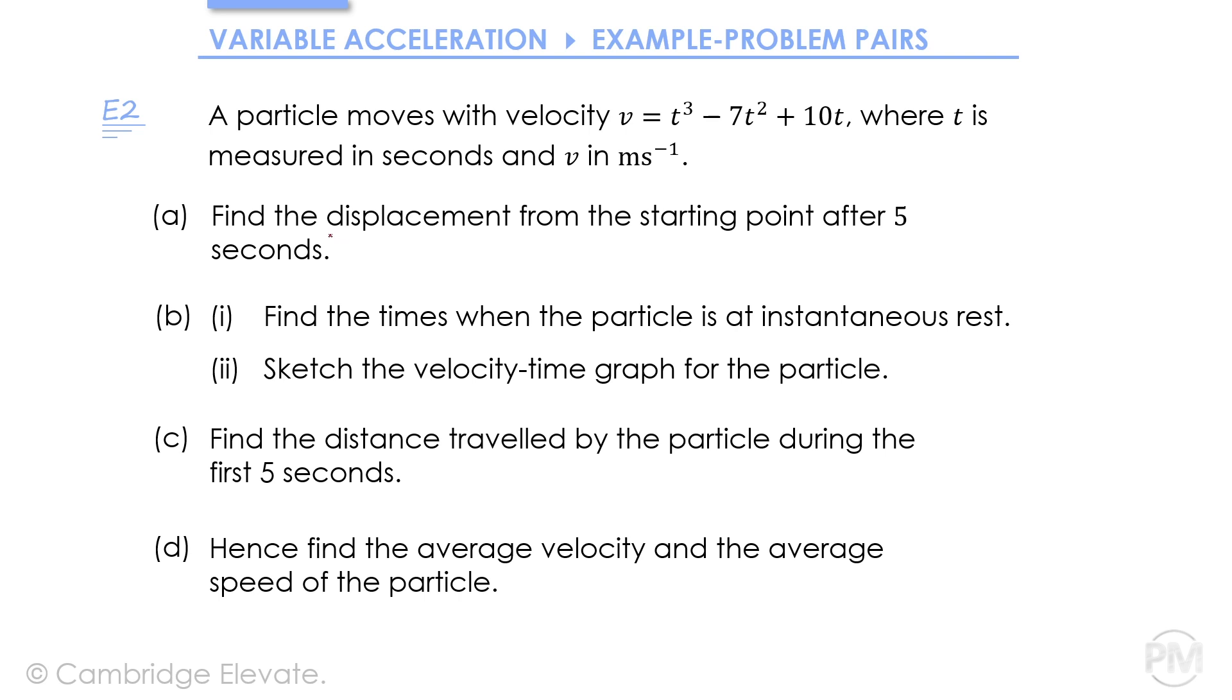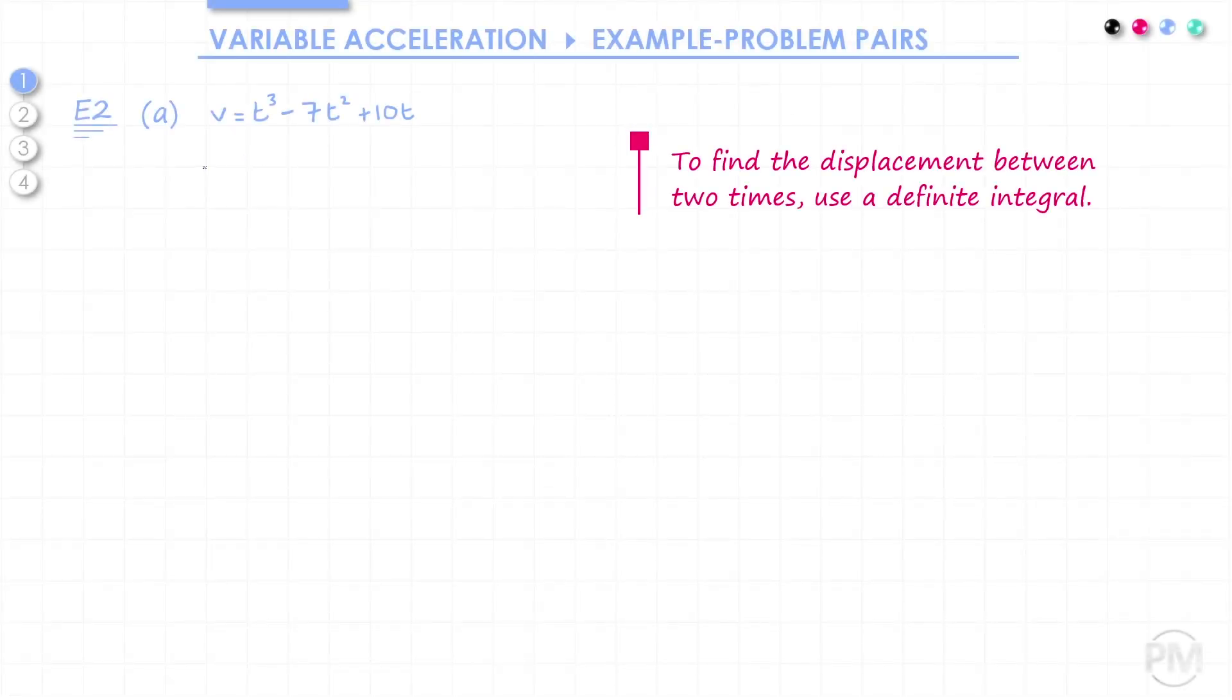If we want to find a displacement between the start and 5 seconds, that implies we're looking for a change in displacement from t equals 0 to t equals 5. So we can do a definite integral to begin with to find this change in displacement. Starting with our expression for the velocity, we're going to integrate to find the displacement.